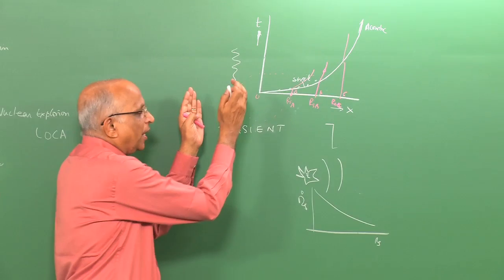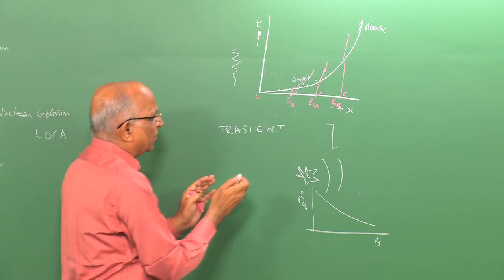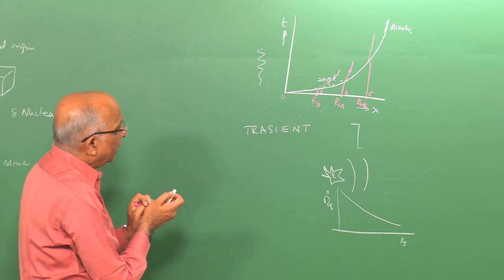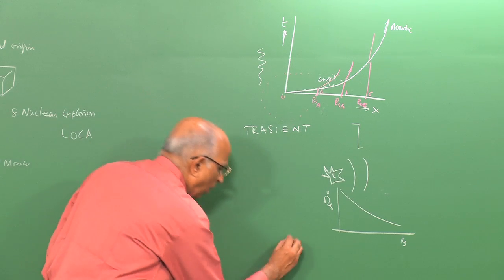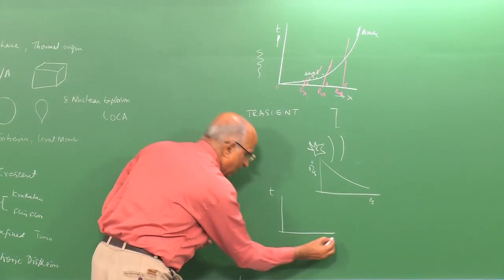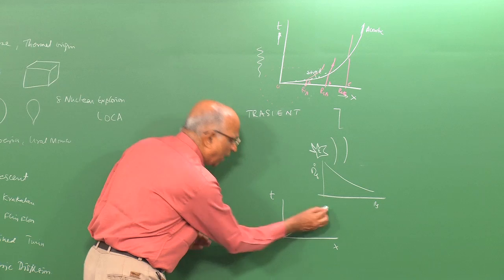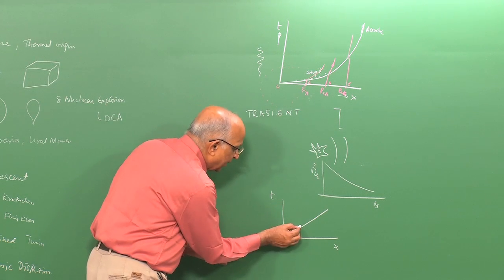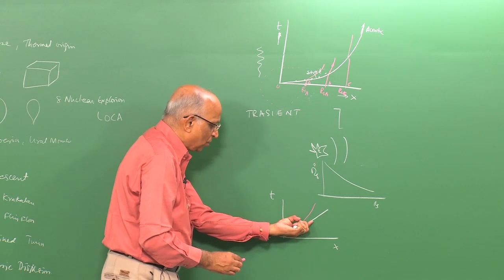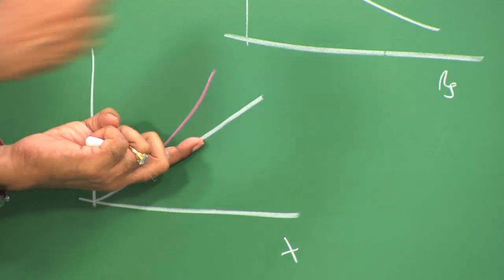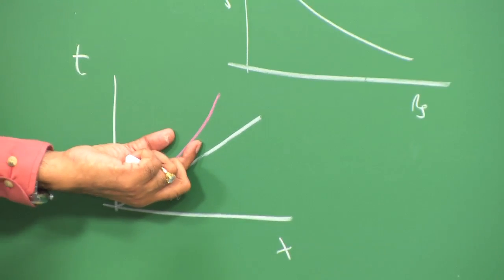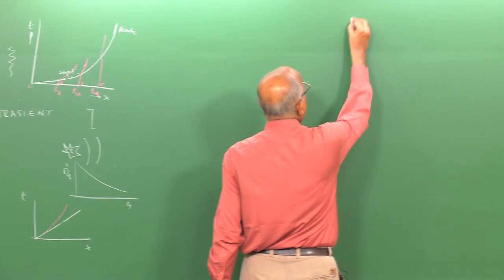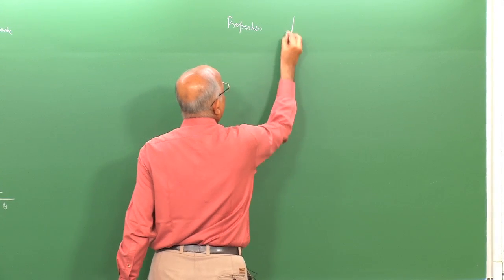Before getting into detailed predictions, can we make the problem simpler? Instead of looking at the decaying shock wave, let us presume the shock moves at constant velocity, predict the properties behind it, and then later account for the decaying effect. Today's class will specifically look at the properties behind a shock wave moving at constant speed.